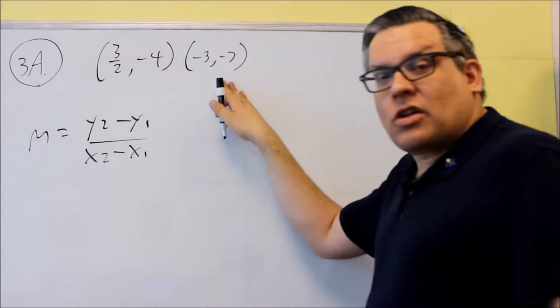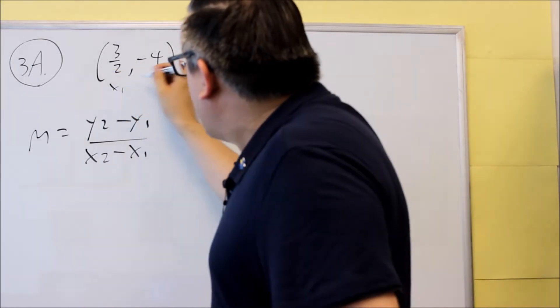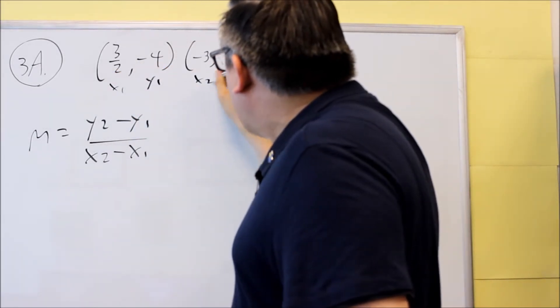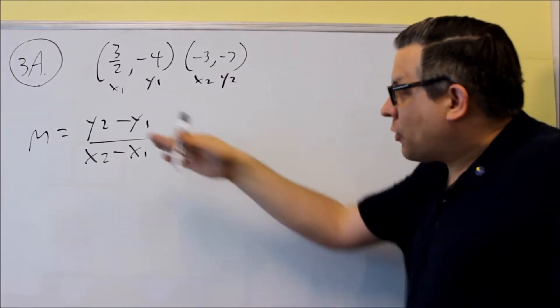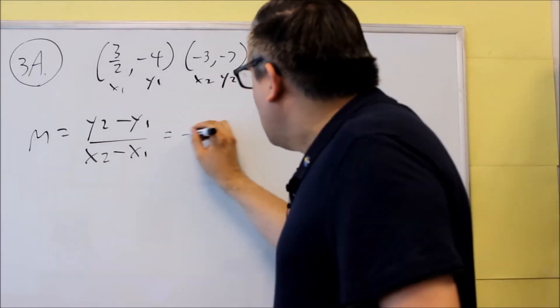Now the x1 and the y1, we're just going to label our point. I can put x1, y1 here, x2, y2 right there. So we're going to label these, and then we're going to plug the information into the formula.